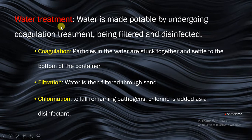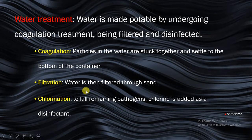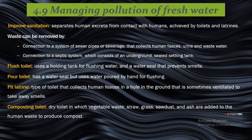We also have water treatment, which involves making water potable through coagulation, filtration, and disinfection. Coagulation is when particles in the water are stuck together and settle to the bottom of the container. Filtration is when water is then filtered through sand. Chlorination involves adding chlorine to the water, which helps to kill pathogens and disinfect it to make it potable for drinking and other uses.